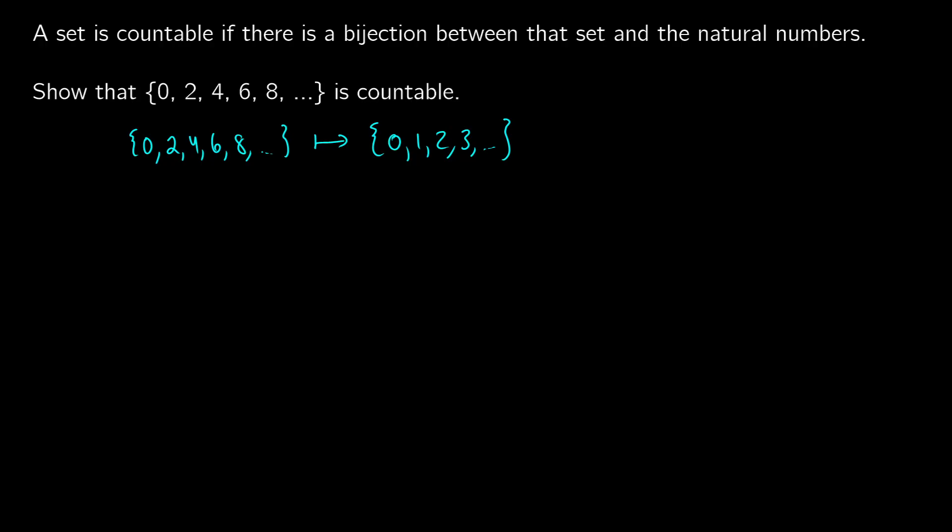So what we can do is we can realize that each of these numbers on the left, if we divide them by 2, what we get is some number in our set of natural numbers. We can take 2n and map it onto n, which would be the same as saying that n gets mapped onto n over 2.